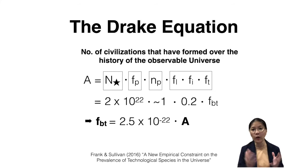We can take all of these numbers together and we get still a very, very large number. The last three factors, what we're calling the biotechnical factors, are actually unknown, all of them are unknown. So we can lump them all together into one factor f sub bt for biotechnical.